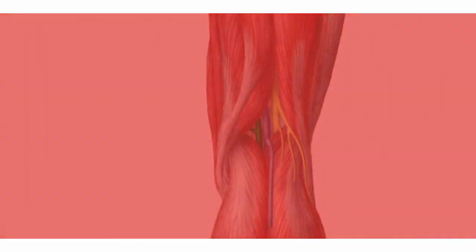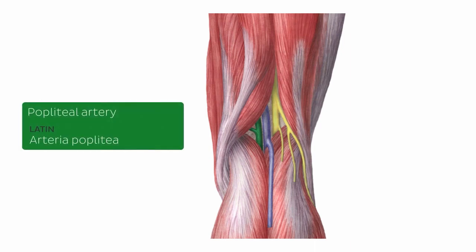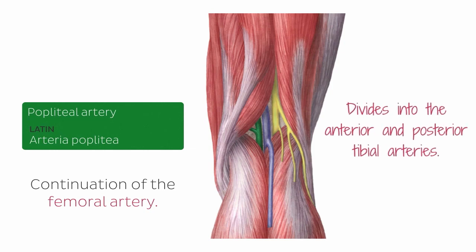We're now ready to move on to the very first artery on that list. This image shows the back of your knee with the several muscles found in this region along with some blood vessels and nerves. We're highlighting the popliteal artery. This blood vessel is the continuation of the femoral artery, the main arterial blood supplier of the leg. It runs from the adductor hiatus until the lower margin of the popliteal muscle, where it divides into the anterior and posterior tibial arteries. During its course, the popliteal artery gives off several branches that will be covered on the next slides.